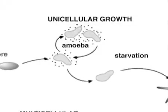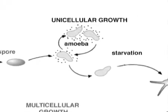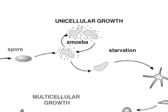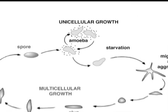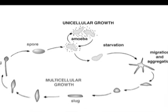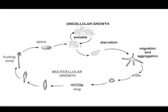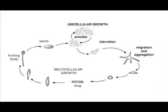An amoeba called Dictyostelium discoideum has long been exploited by scientists studying chemotaxis due to an interesting phenomenon that these cells exhibit when food is scarce.